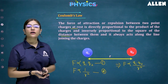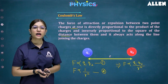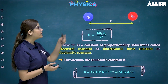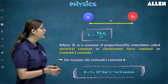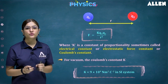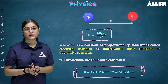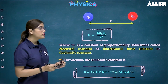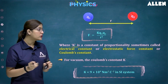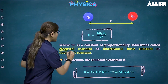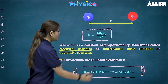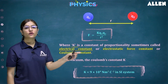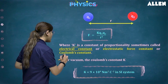Whenever we have to remove the sign of proportionality, we have to take a constant. So we write F is equal to k times Q1 times Q2 upon r squared, where K is a constant of proportionality — sometimes called the electrical constant, electrostatic force constant, or Coulomb's constant.